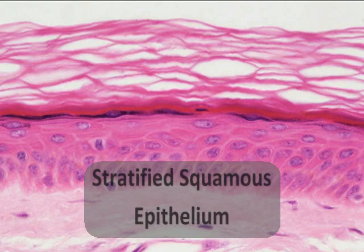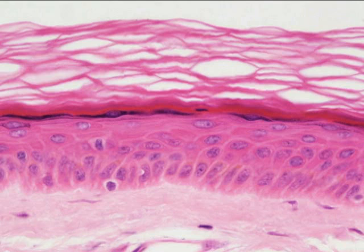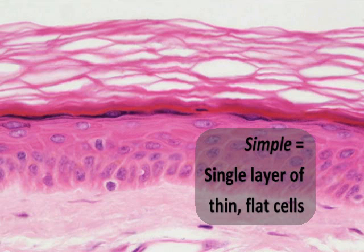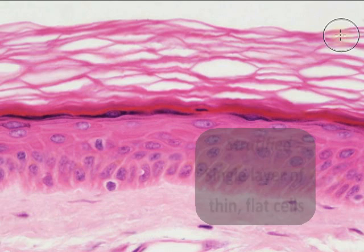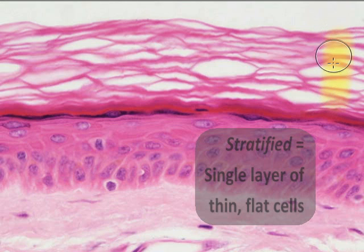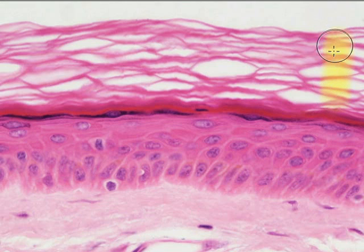Let's begin with stratified squamous epithelium. We know simple epithelial tissue is one cell layer thick. Stratified epithelium is many layers thick.